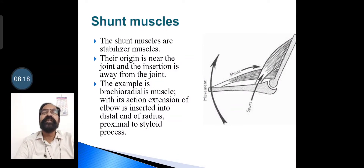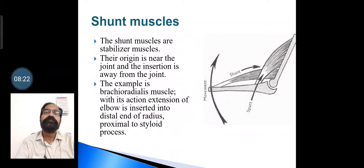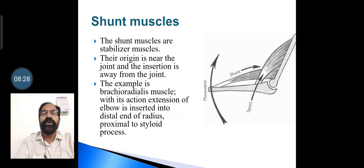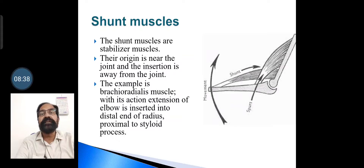Shunt muscles are stabilizers. Their origin is near the joint and the insertion is away from the joint. An example is the brachioradialis muscle, which acts in extension of the elbow and is inserted into the distal end of the radius proximal to the styloid process.